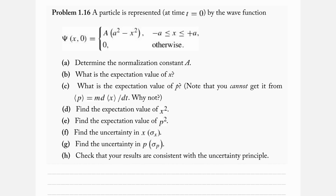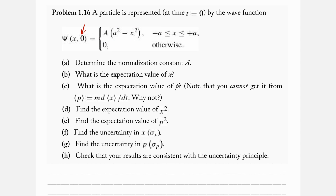In this video, we are going to look at problem 1.16 in Griffith's Introduction to Quantum Mechanics, 3rd Edition. We have a particle represented by some wave function psi of x at t equals 0, where if we're between minus a and plus a, this is the wave function. Otherwise, outside of that, we just get 0 for psi.